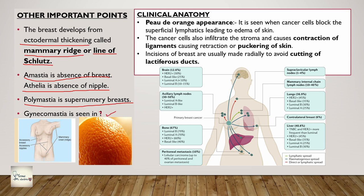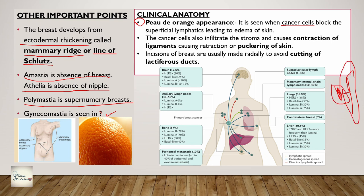Coming to clinical anatomy - just mention these three points. First is peau d'orange appearance. This is asked in viva: where is peau d'orange appearance seen? Cancer cells infiltrate the lymphatics, then proliferate and reach vessels, break the vessel wall, and start spreading into other tissues - this is the stage called metastasis. Until that stage, the cancer was local, but now it has spread to other body parts like the brain, liver, lungs, and bones. The most common metastatic sites are the lungs and liver. The cancer cells block the superficial lymphatics, leading to edema of the skin, causing the peau d'orange appearance.